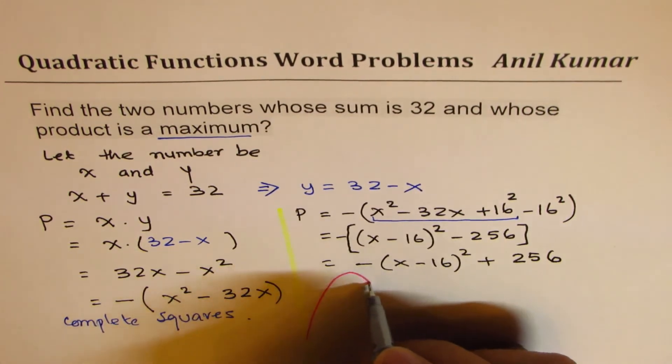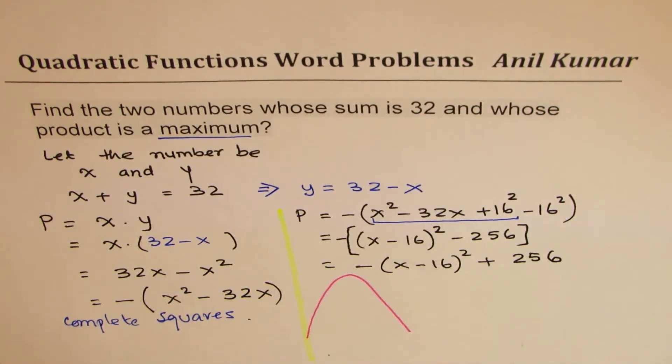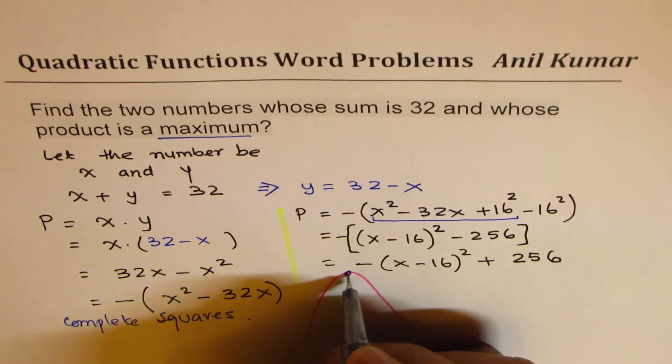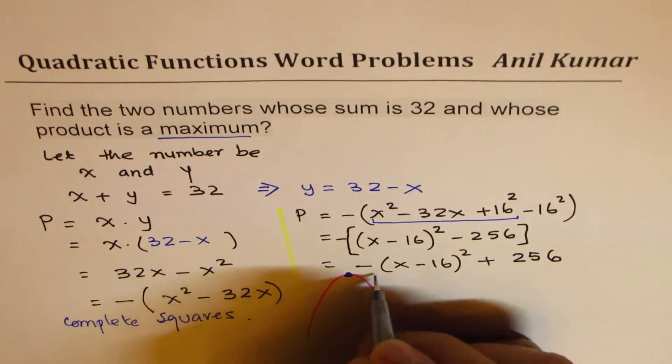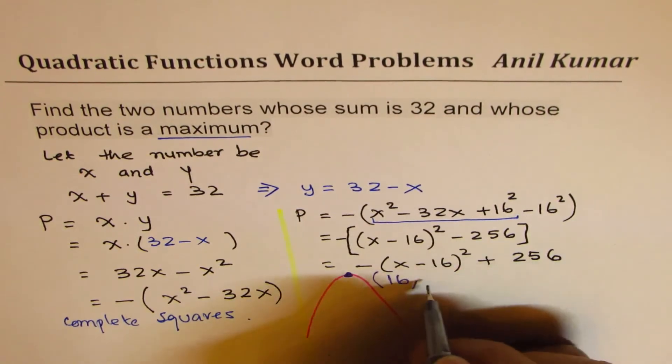Minus means it opens downwards, so it's a parabola kind of like this. And so you see that we do have a maximum here and the coordinates of the vertex are 16, 256.